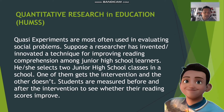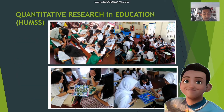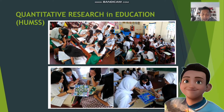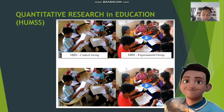In quantitative research in education, quasi-experiments are most often used in evaluating social problems. For example, a researcher who invented an innovative teaching method for improving reading comprehension among junior high school learners selects two junior high school classes — one receives the intervention and the other doesn't. Students are measured before and after the intervention to see whether their reading scores improve. These designs contain many elements of a true experiment, but participants are not randomly assigned to treatment and control groups.